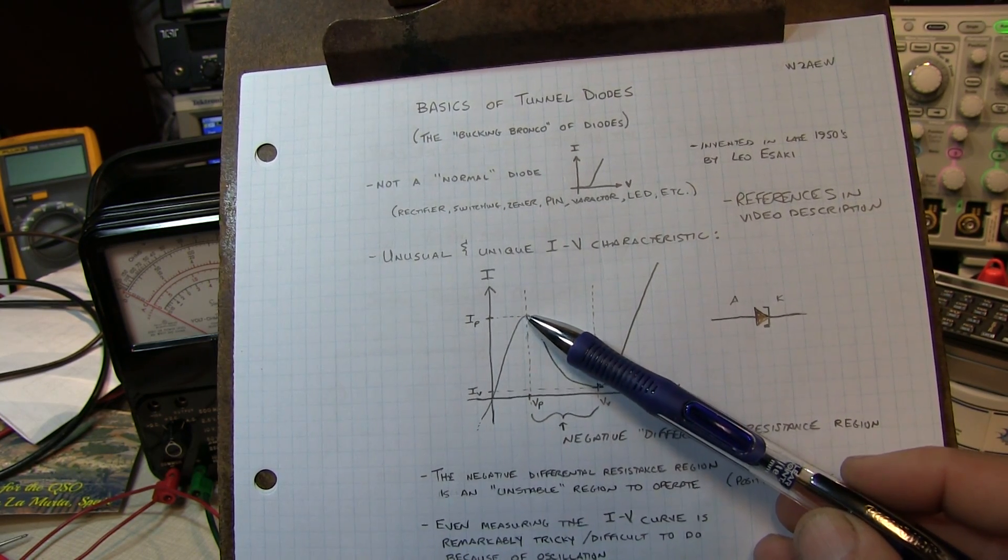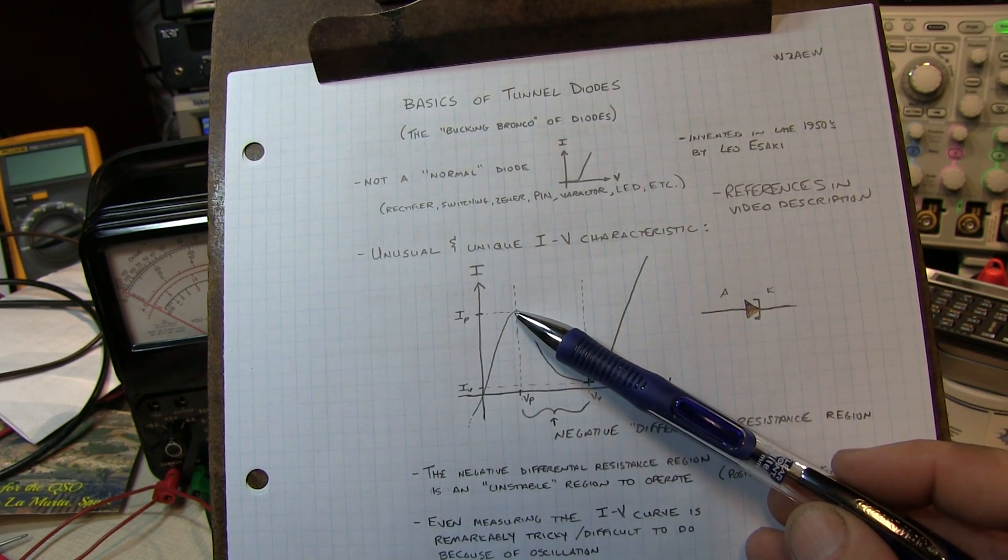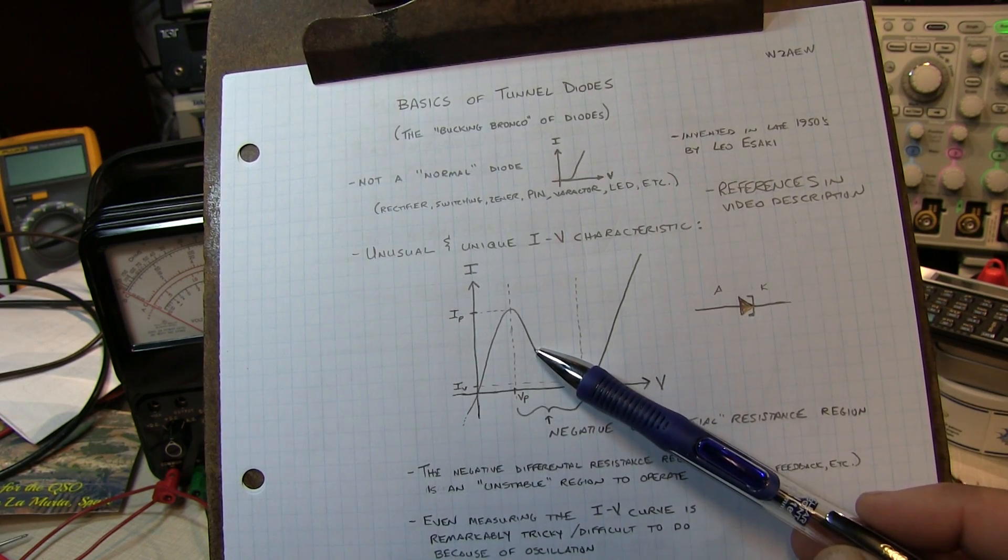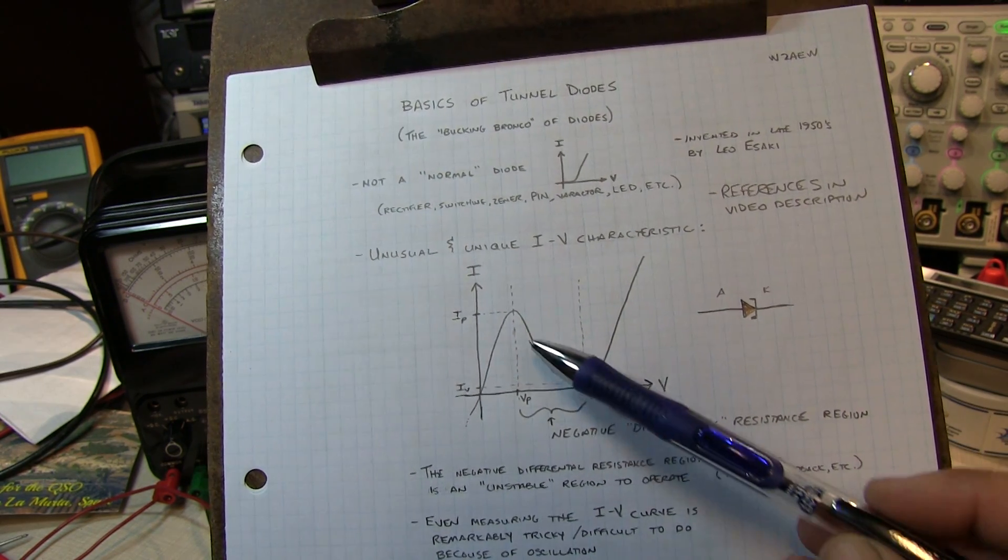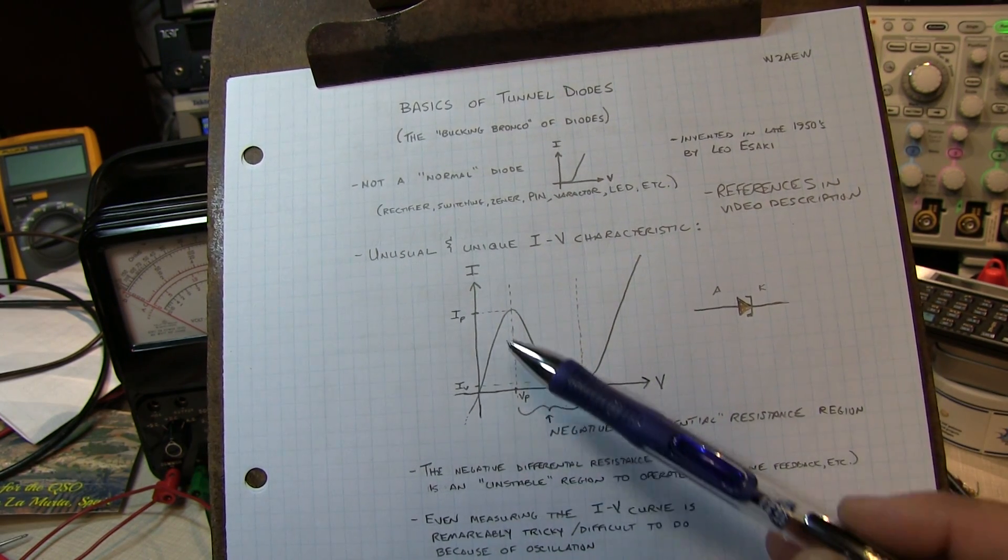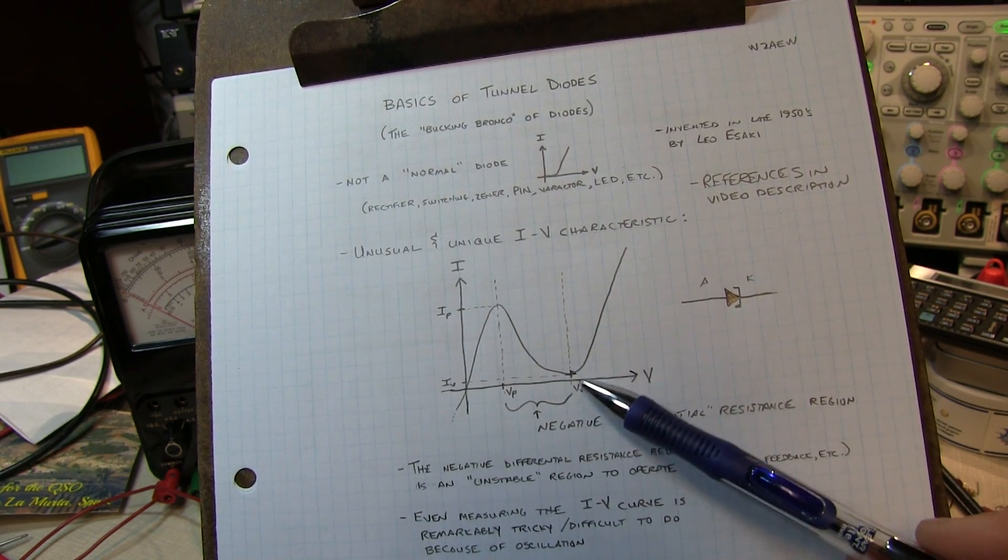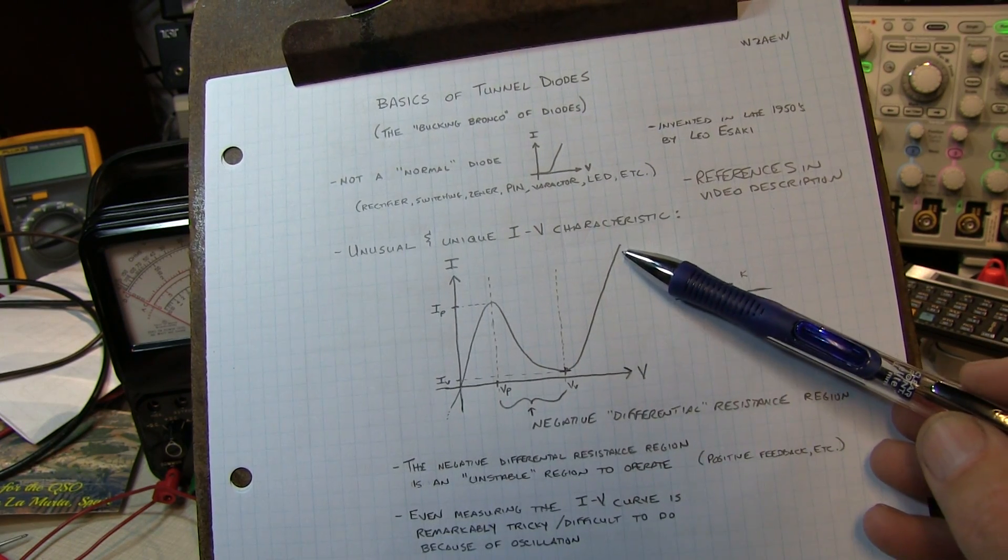You reach a value of current called IP, and all of a sudden, if you increase the voltage beyond that point, the current actually begins to fall. And you have this kind of negative differential resistance region where the current falls with increasing voltage, so that's kind of a negative resistance characteristic. And then you reach a valley voltage, where beyond that, increases in voltage will cause the current again to rise.